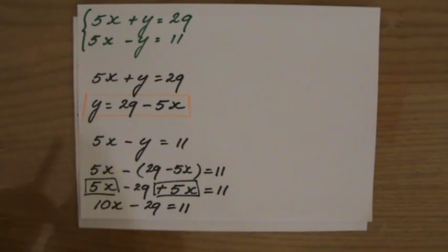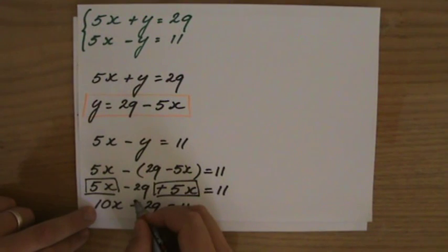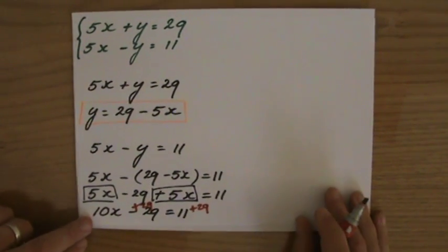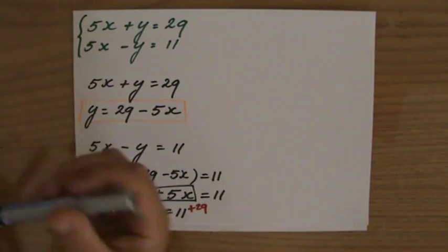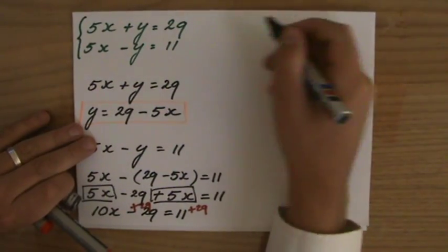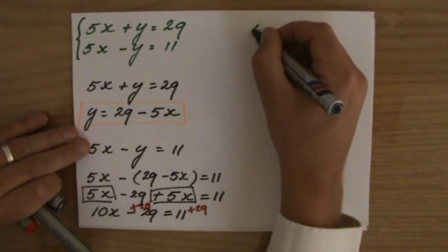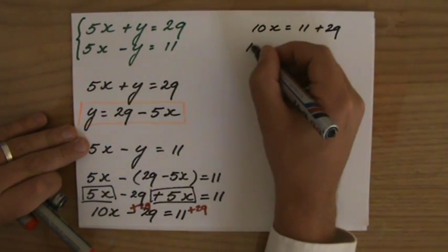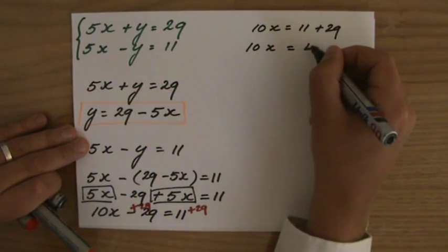Now I'm going to rearrange it. I want to get rid of this negative 29 here. How do I do that? By doing the opposite operation, plus 29, on both sides then of course. I'm going to continue here. So 10x equals 11 plus 29, 10x equals 40.